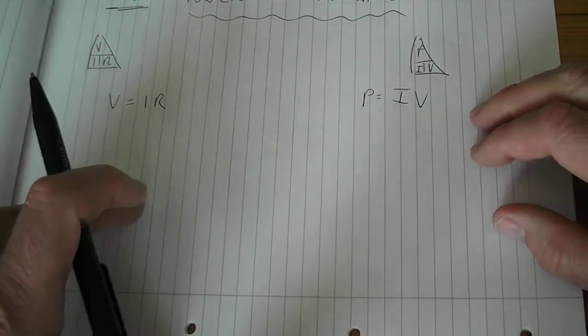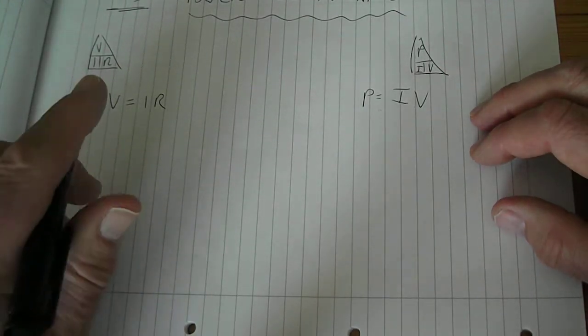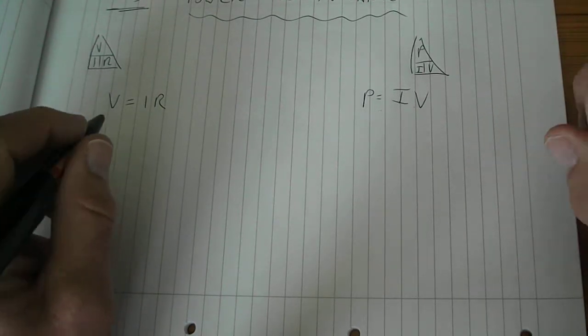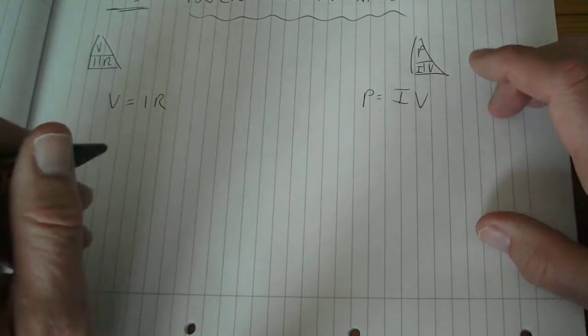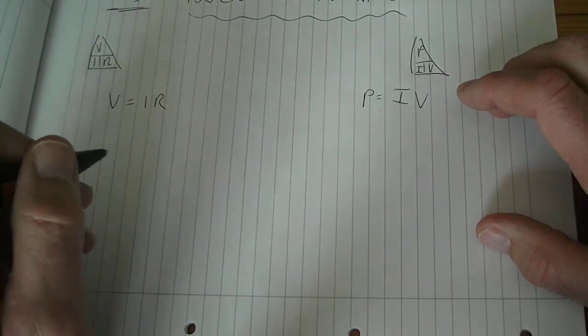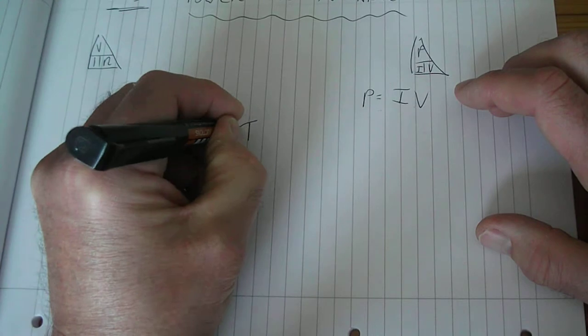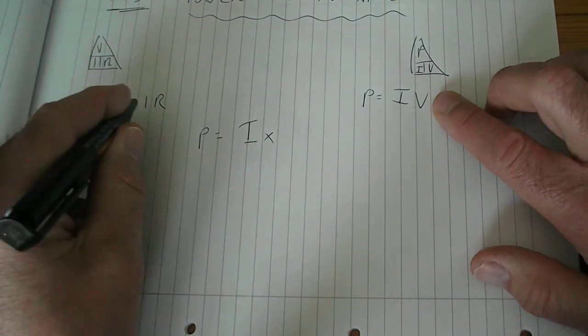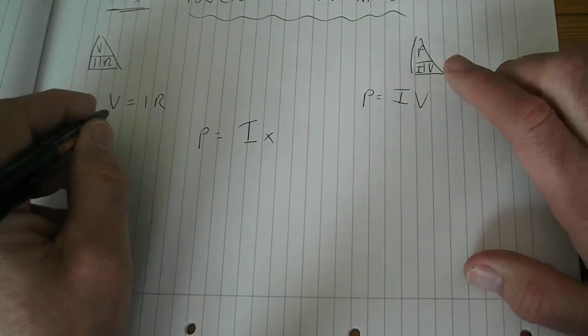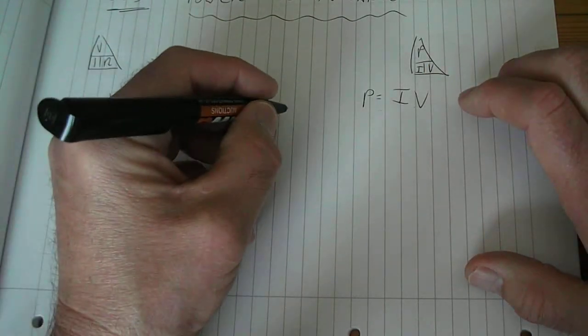So if we substitute V on this side for what's on this side, I could say that power equals I times, well, if I have it as IR because I know that V equals IR, times I times R.